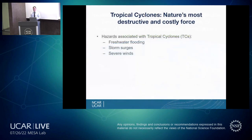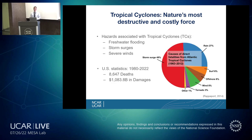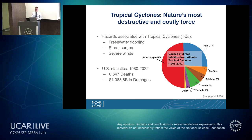Tropical cyclones are the most destructive and costly severe weather event that nature has to offer. The hazards associated with these tropical cyclones include freshwater flooding, storm surges, and severe winds carrying debris. Over the last 40-plus years, there have been over 8,500 deaths and a trillion dollars in damages in the U.S. alone. Over 80% of the fatalities associated with Atlantic tropical cyclones are from water hazards, and this led us to investigate the precipitation footprints of tropical cyclones.